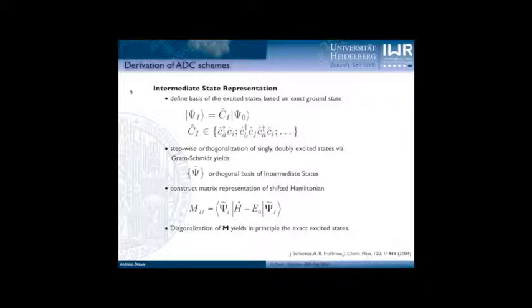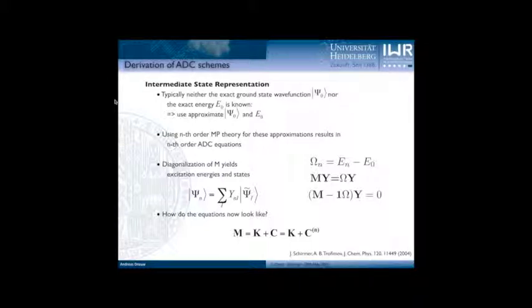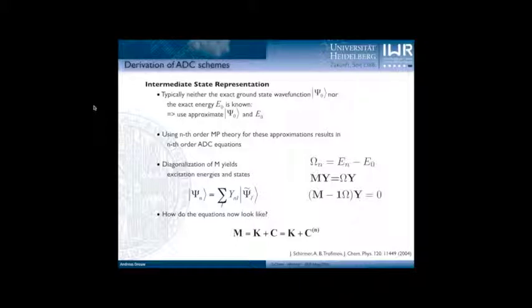If you diagonalize M you get in principle exact excited states if you had started from the exact correlated ground state. However, since we never have the exact electronic ground state, we have to use some approximation — we use the Møller-Plesset ground state for the wave function and the corresponding Møller-Plesset energy as the starting point. So if you use second order MP2, you arrive at the ADC2 equations. If you use third order Møller-Plesset theory, you arrive at the ADC3 equation. At the end, you diagonalize M and obtain excited states.